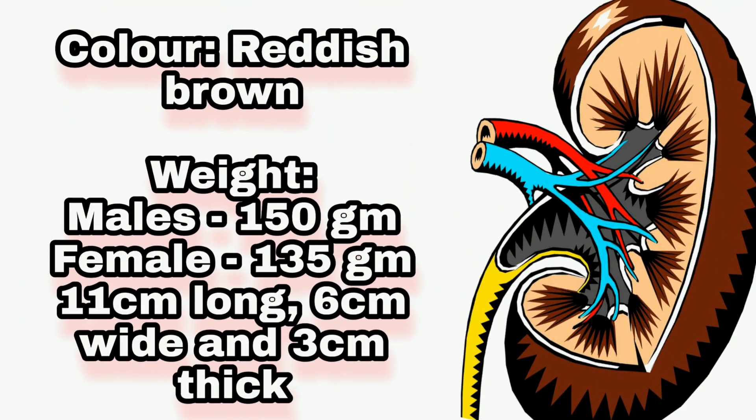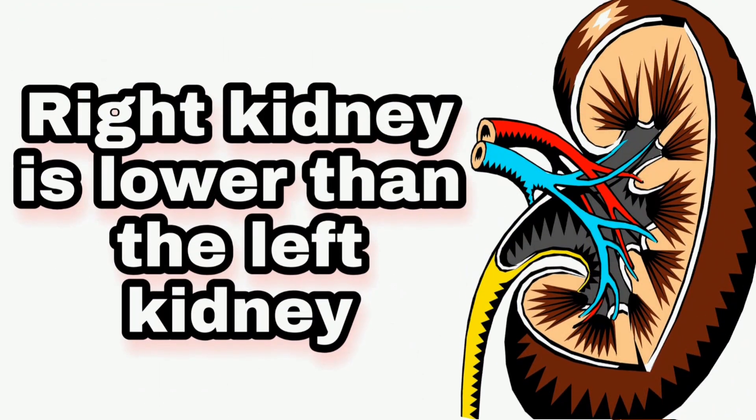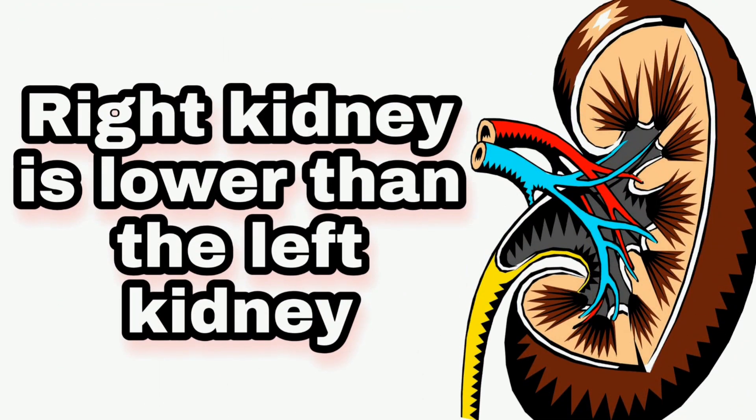The kidney color is reddish brown. The weight is 150 grams for male and 135 grams for female. For the kidney shape, it is a bean shape — 11 cm in length, 6 cm in width, and 3 cm in thickness.